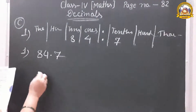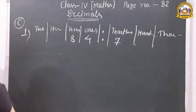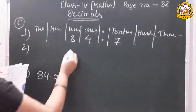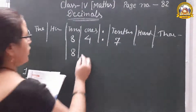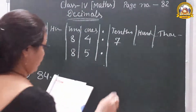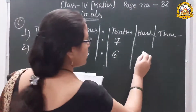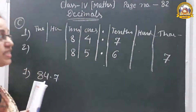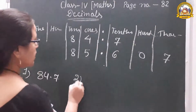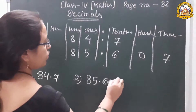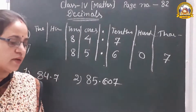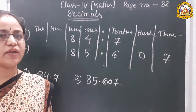Question 2: 8 in the tens place, 5 in the ones place, 6 in the tenths place, 7 in the thousandths place. There is no digit on the hundredths place, so we put 0 there. The number becomes 85.607.